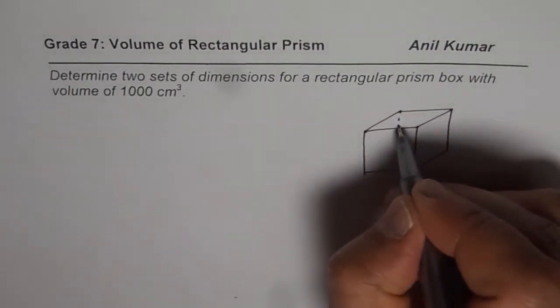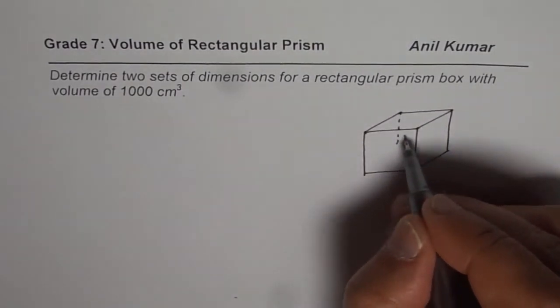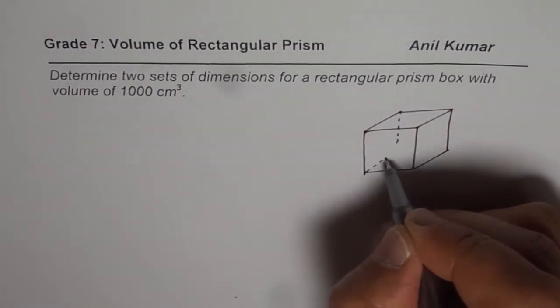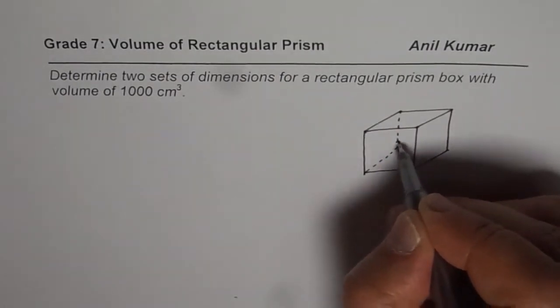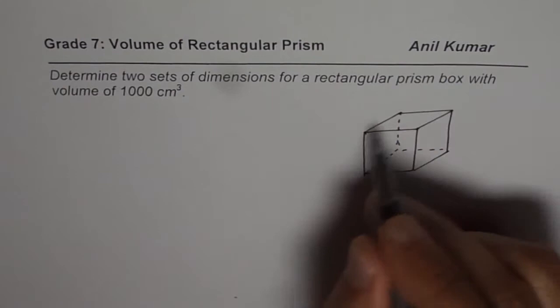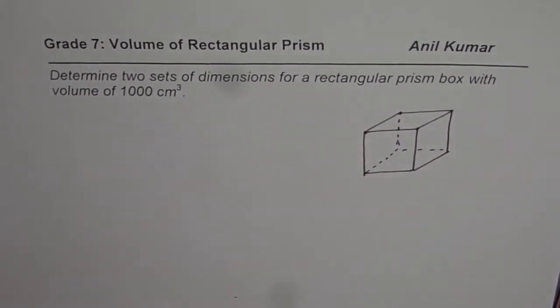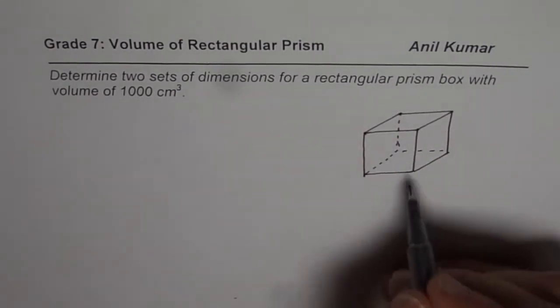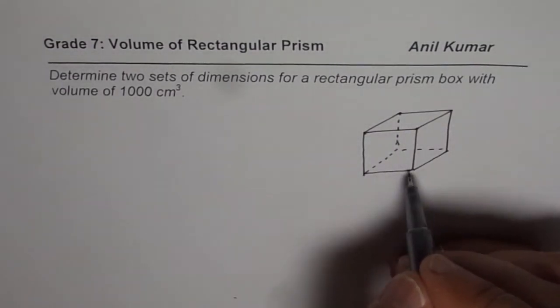To give you a 3D effect, we can always draw these dotted lines which indicate sides which we cannot see from here. So therefore, I am drawing dotted lines for them. So like this, we can make a rectangular prism. So each side is, each face is a rectangle here.